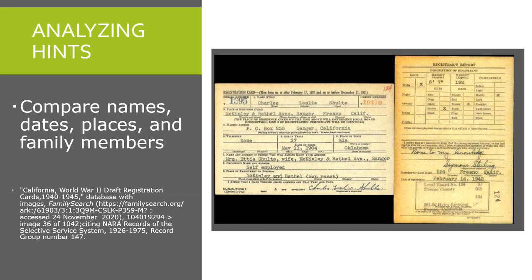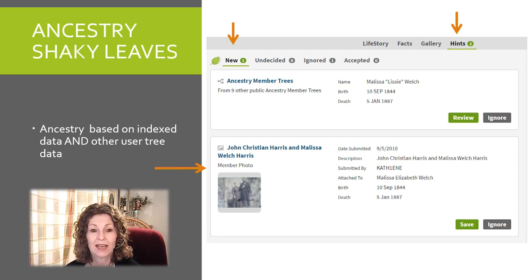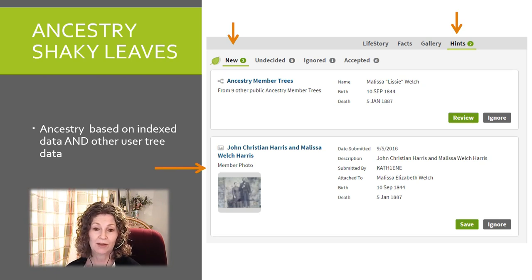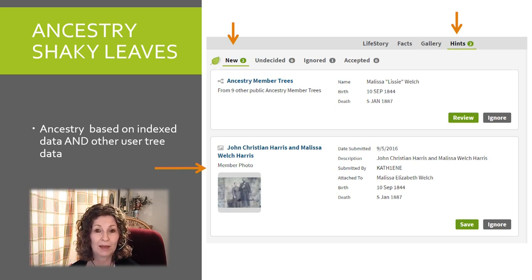As you go through and analyze hints on FamilySearch you can follow the same process. If you don't know much about the person, step back and look at other sources on the family tree and analyze those to see if the suggested hint matches what is already known. Ancestry also has hints — these appear as shaky leaves — based on index data and other user tree data. If someone has attached a record in Ancestry to an individual and you also have that individual, you might get a hint. Just because someone else attaches a record doesn't mean it matches your person, so it's really important to evaluate these hints carefully.